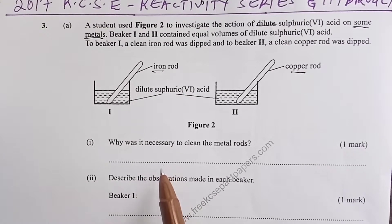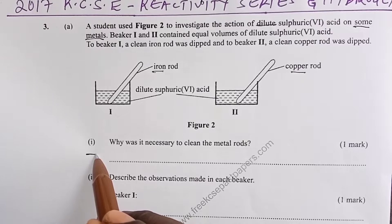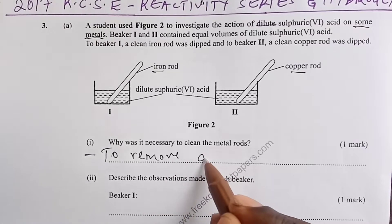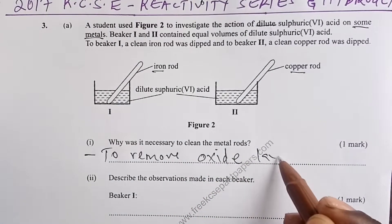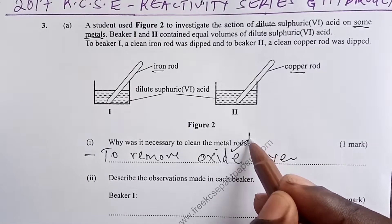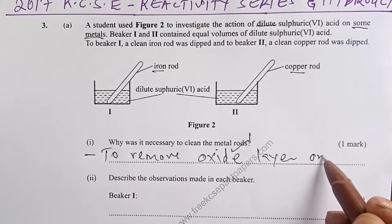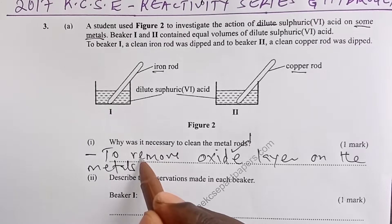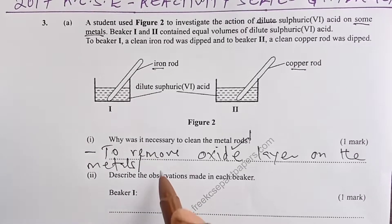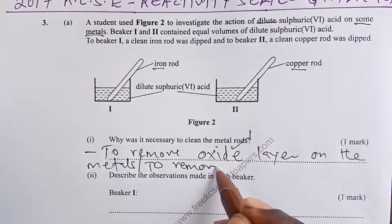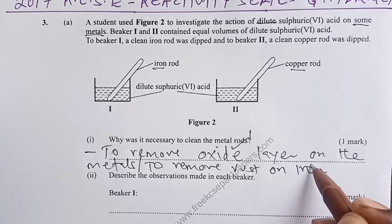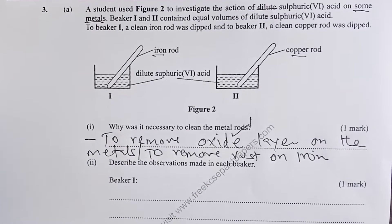The first question asks why it is necessary to clean the metal rods. The answer is to remove the oxide layer on the metals, for one mark. A student could also write 'to remove rust,' but this applies specifically to iron, since copper does not rust — instead it corrodes.